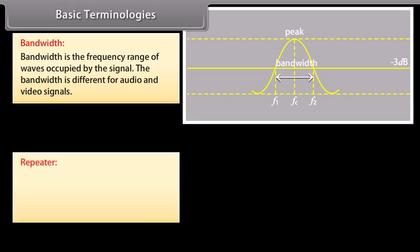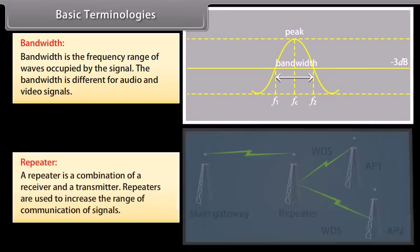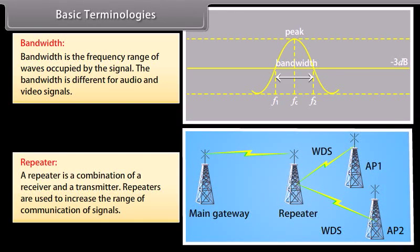A repeater is a combination of a receiver and a transmitter. Repeaters are used to increase the range of communication of signals.